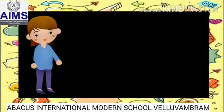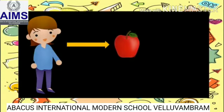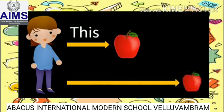Look at more examples. This is an apple — this apple is near to me, so I am using 'this'. That is an apple — the apple is far from me, so I am using 'that'.